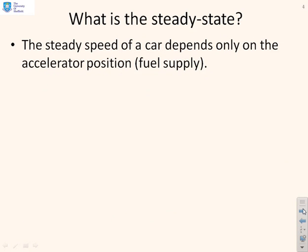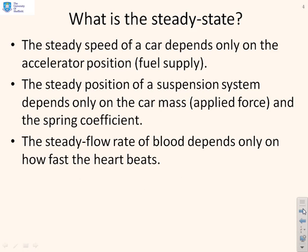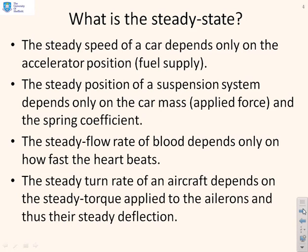To emphasise the point: the steady state speed of a car depends only on the steady state accelerator position, not on any other dynamic characteristics. The steady position of a suspension system depends only on the car mass and how many passengers are in it — it doesn't depend upon the road or anything else because we're in steady state. You can think of other examples which illustrate that many model parameters don't actually affect the steady state position.